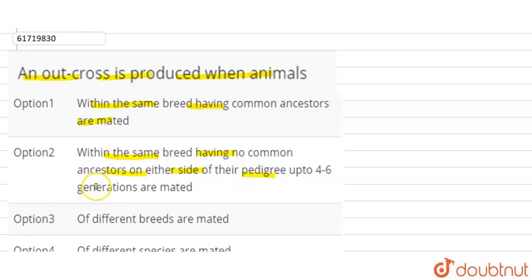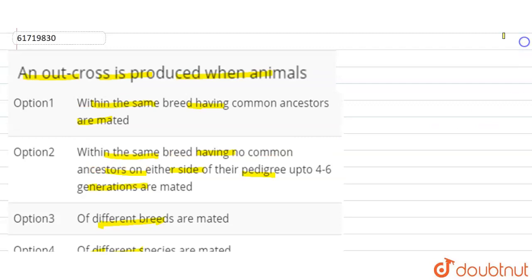Other options include: animals of different breeds are mated, or animals of different species are mated. Here we will talk about outcrossing specifically.